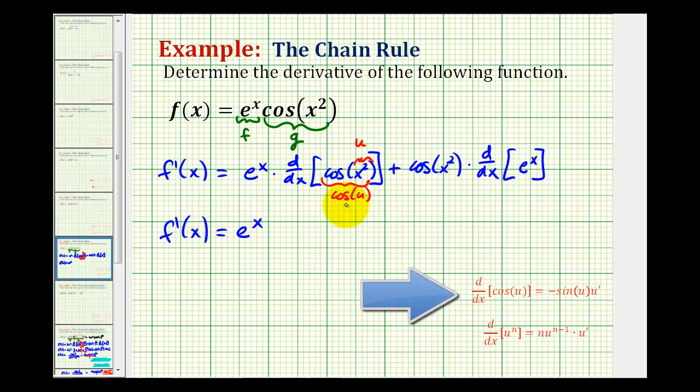We'll have f prime of x equals e to the x times the derivative of cosine u with respect to x. Well, the derivative of cosine u would be negative sine u times u prime. So we'll have negative sine u, but u is x squared, times u prime, and again, since u is x squared, u prime would be 2x, plus here we have cosine x squared times the derivative of e to the x, but the derivative of e to the x is just e to the x.